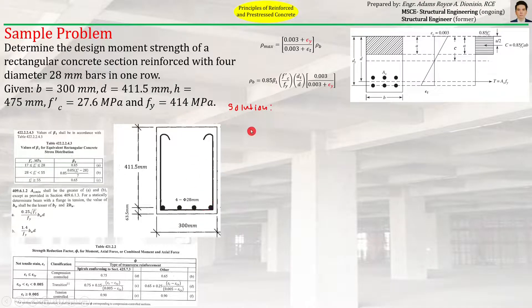Before we proceed with the computation of φMn, let's check first the compliance of the section with respect to minimum steel ratio. Let's check the ρ minimum. The ρ actual, or simply ρ,